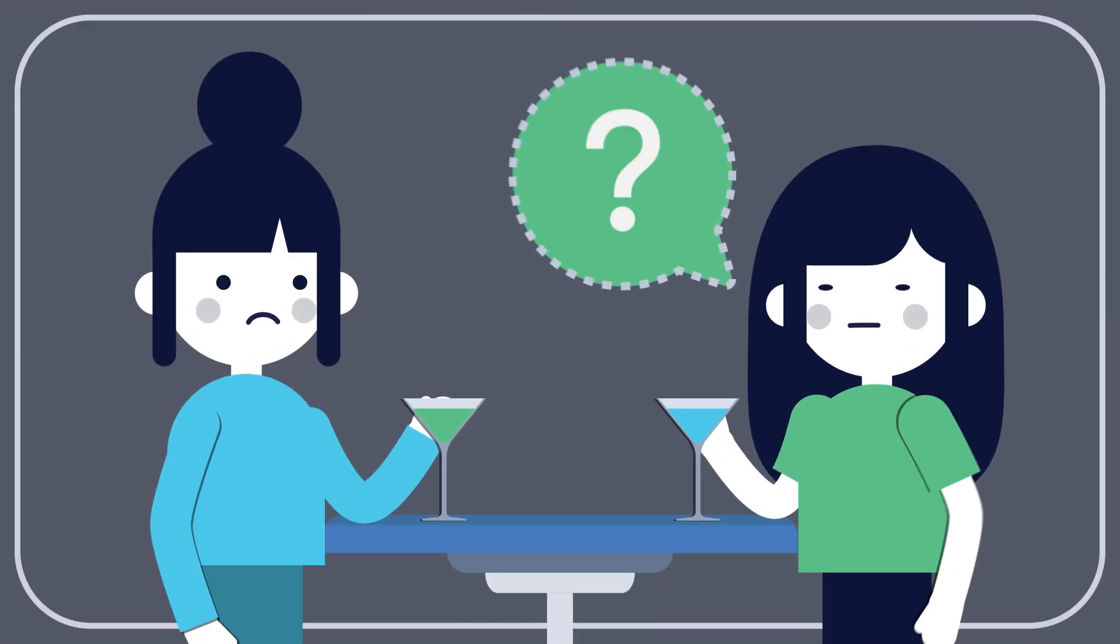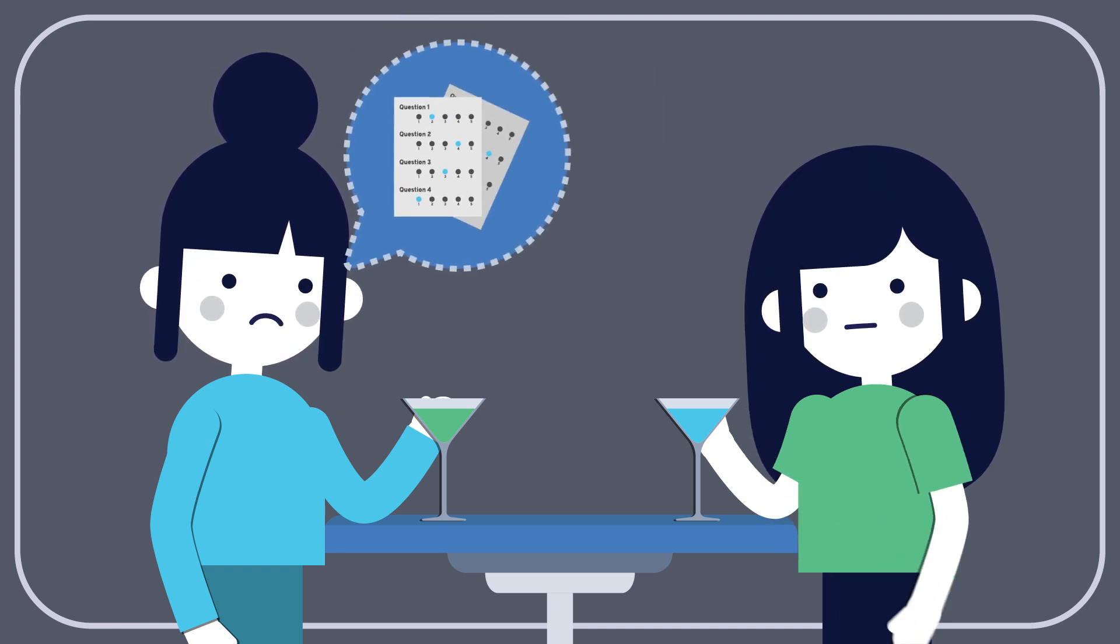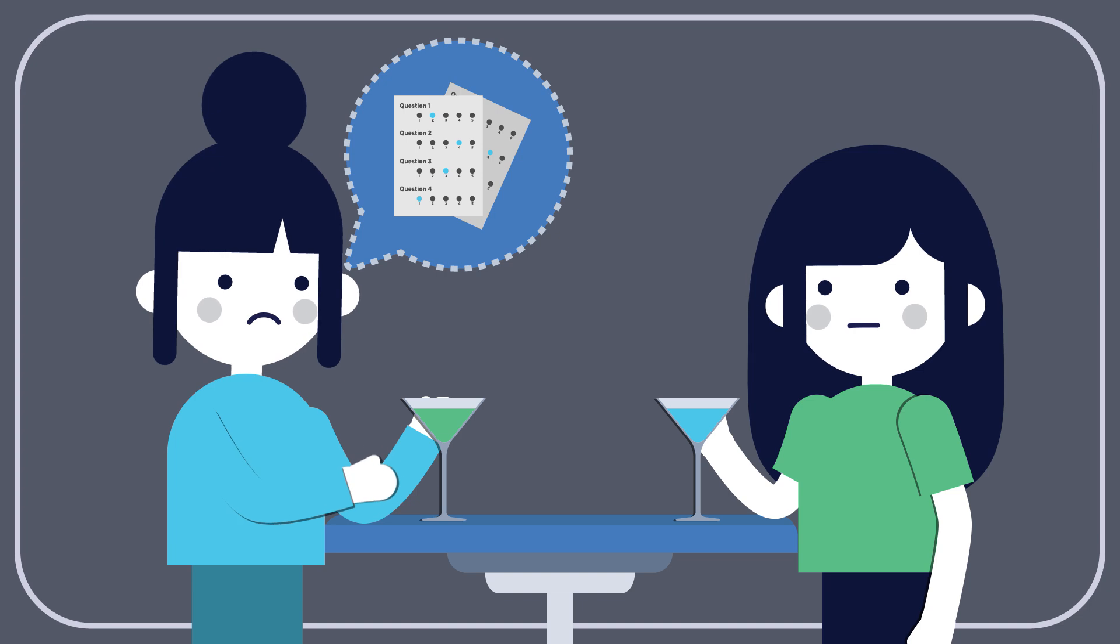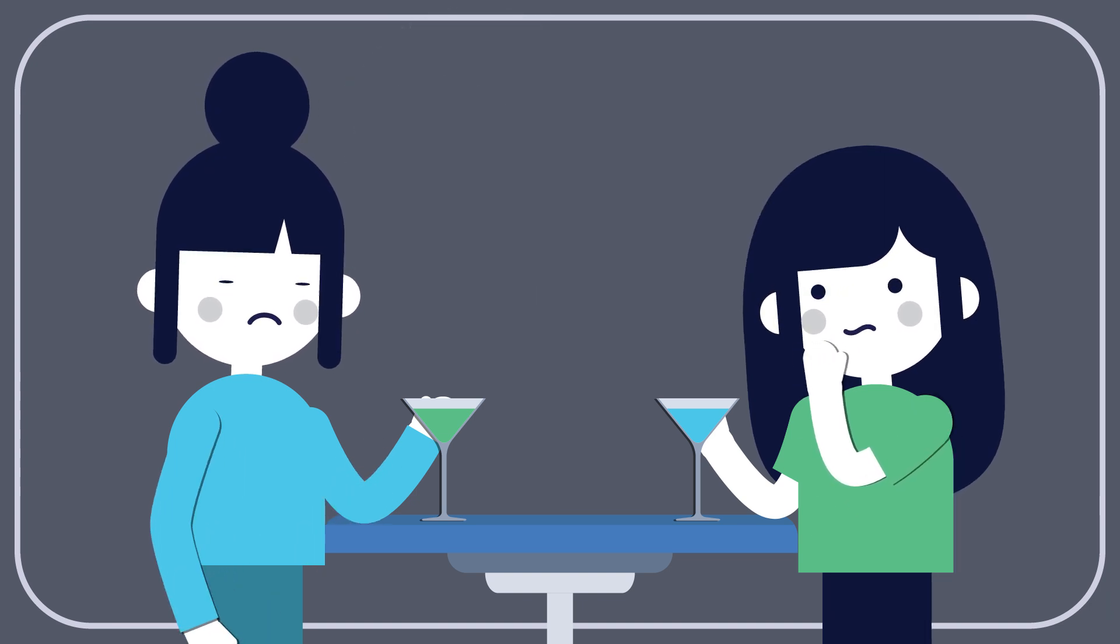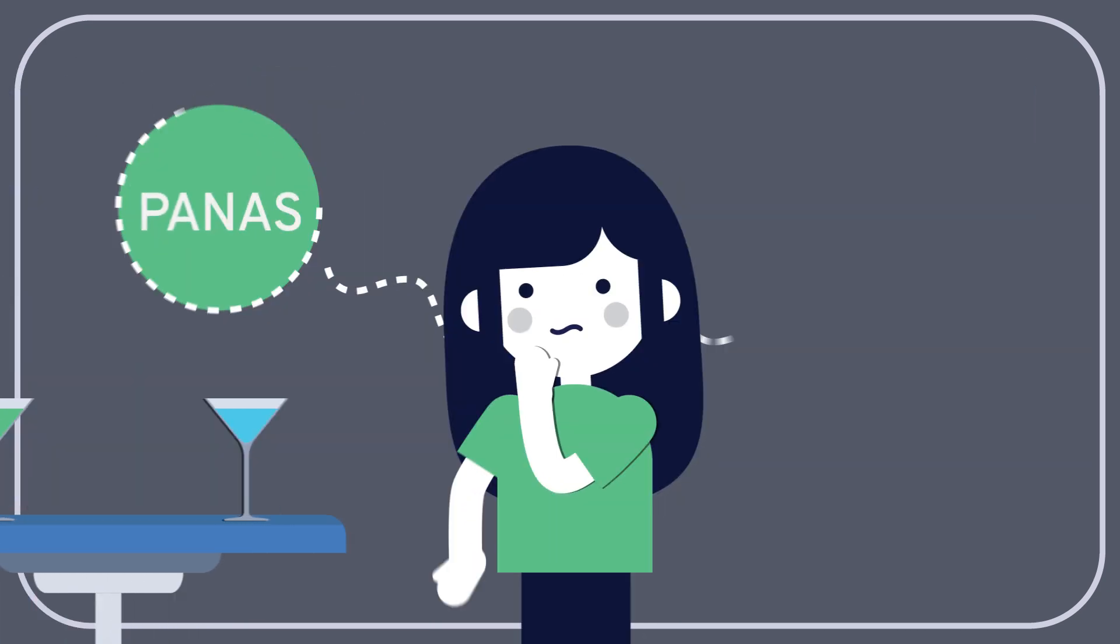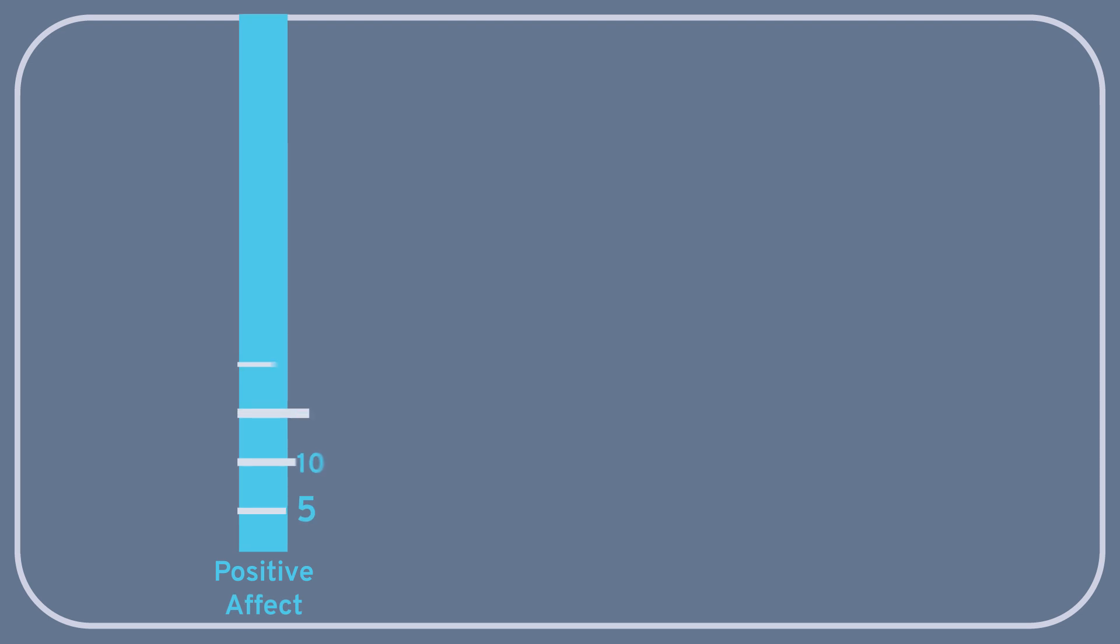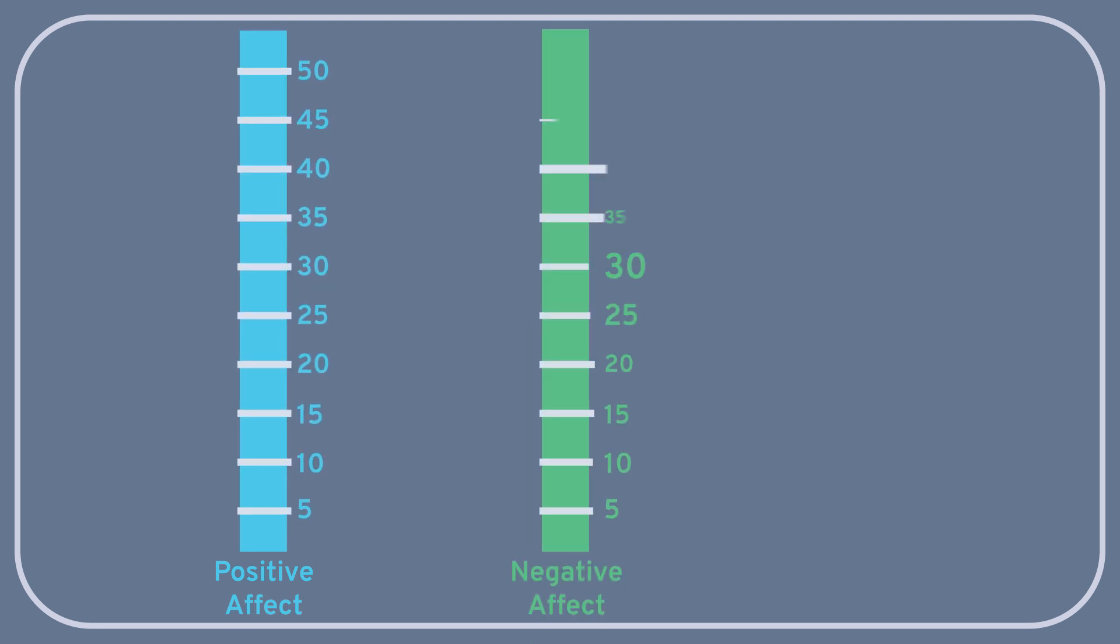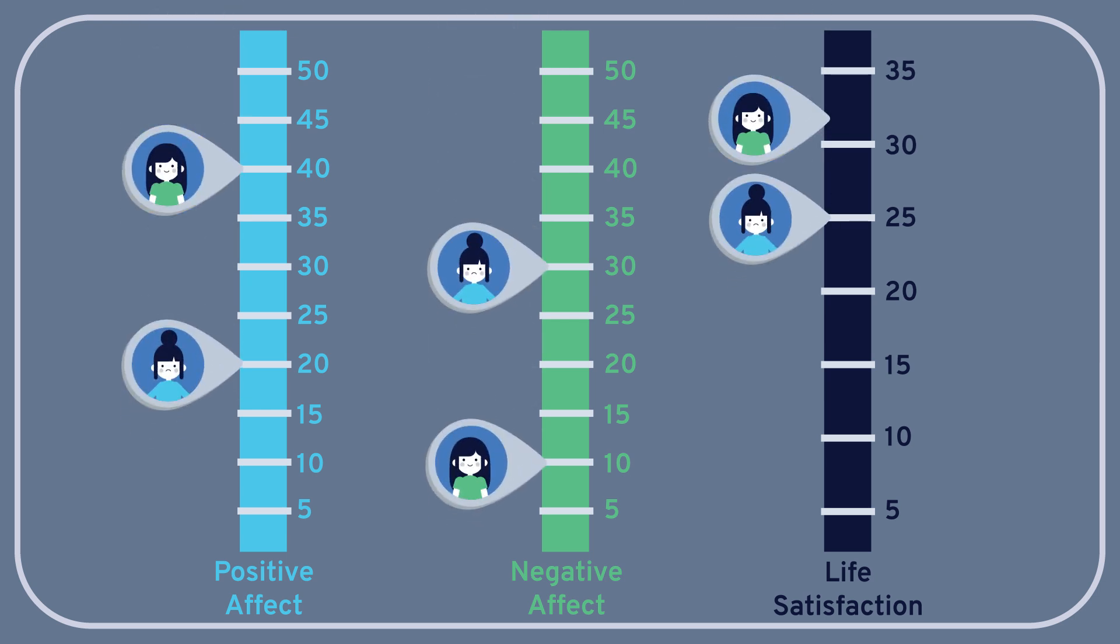So when Kathy now asks Maya what she means when she says she's not very happy, Maya has a ready response. She tells Kathy about her troubling survey results. Surprised to hear Maya's low happiness scores, and wondering where she herself stands on the happiness spectrum, Kathy decides to assess her own levels of positive and negative affect and life satisfaction. And it turns out that Kathy's scores confirm what Maya has been saying. Despite her successes, Maya is not nearly as happy as Kathy.